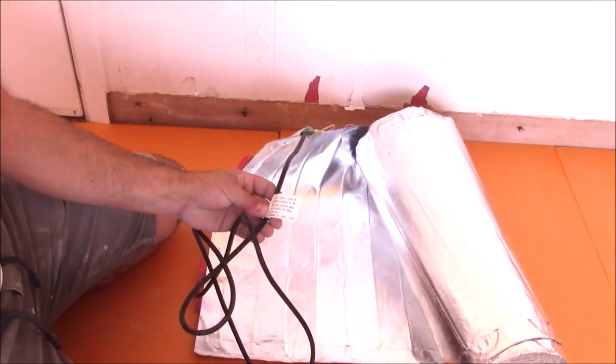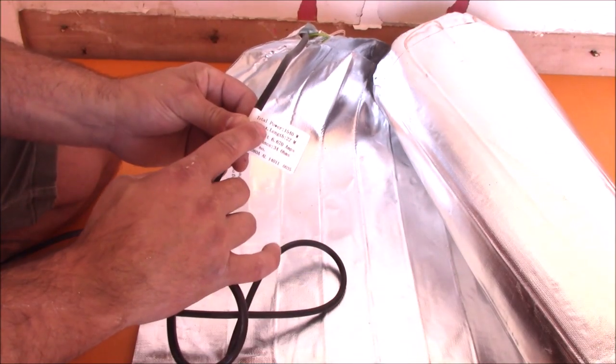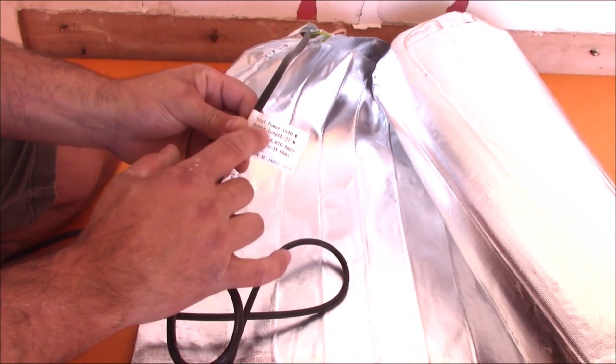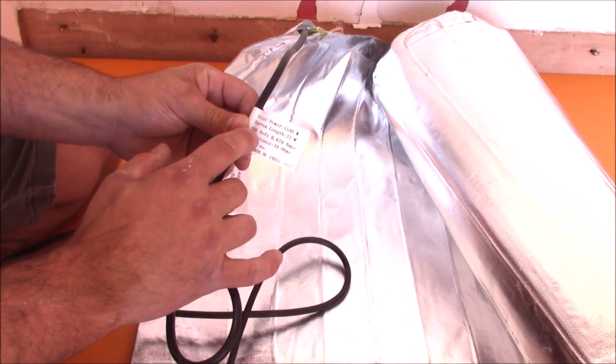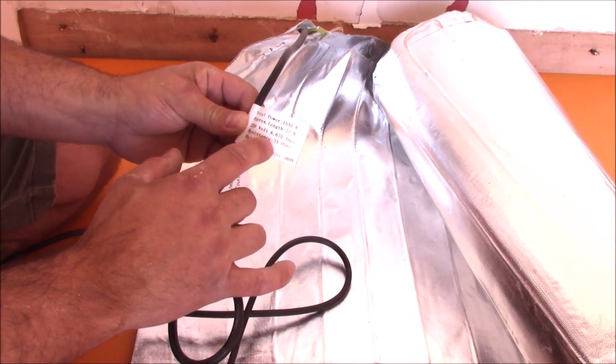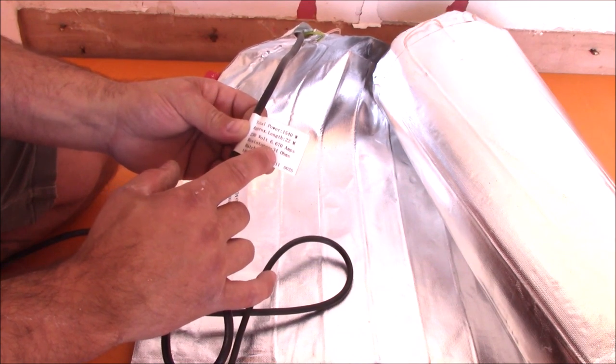Every mat has got a label, and on this label there's some information, like total power, the length of the mat, voltage and resistance. In this case it's 34 ohms.